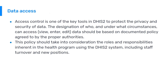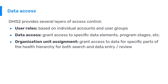Access control is one of the key tools in DHIS2 to protect the privacy and security of data. The designation of who and under what circumstances can access — either viewing, entering, or editing data — should be based on documented policy agreed to by the proper authorities. The policy should take into consideration the various roles and responsibilities inherent in the health program, including the turnover of staff and hiring of new individuals, so that training and establishment of user access is consistently monitored. User roles can be designated based on specific job functions and access levels, whether a healthcare provider, a secondary data entry clerk, a supervisor, or somebody at the national level.